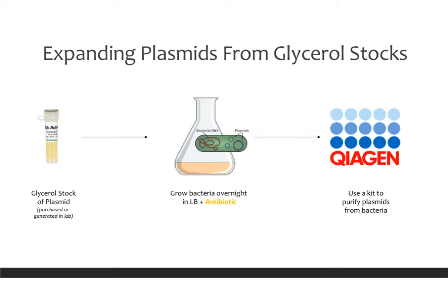Let's talk more about how we actually do this in the lab. Plasmids are the vector for how we get these modifications, and you can generate plasmids in the lab or buy them from a company. They're saved as a glycerol stock in the minus 80. You take just a portion of this stock — maybe 50 to 100 microliters — and grow it overnight in LB media with antibiotic, which is the selection antibiotic that ensures only bacteria containing your plasmid will grow.